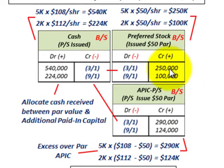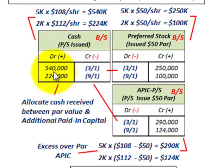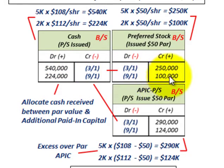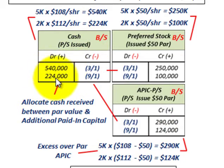Looking at our balances: on March 1st, we have a credit to preferred stock of two hundred and fifty thousand, plus a credit to additional paid-in capital of two hundred and ninety thousand, balancing with the cash debit of five hundred and forty thousand. Similarly on September 1st, credits of one hundred thousand plus one hundred and twenty-four thousand balance with the cash receipt of two hundred and twenty-four thousand.